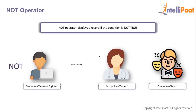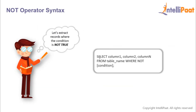Finally we have the NOT operator. With the NOT operator we can extract those records where the condition is not true. For example, to extract all records where the occupation is not equal to software engineer, we use the NOT operator. In the syntax, we follow the WHERE clause with the NOT operator and then give the condition.